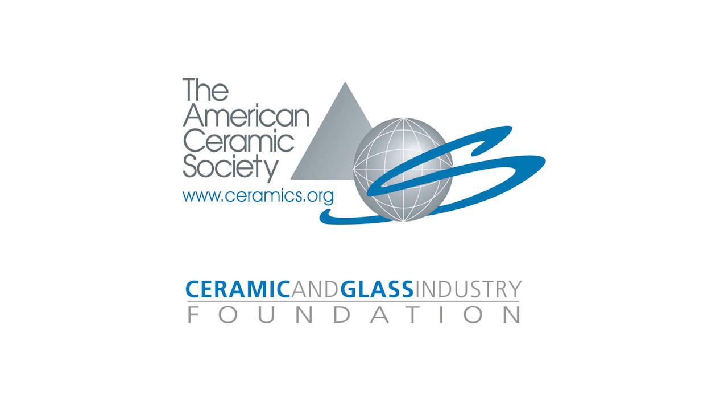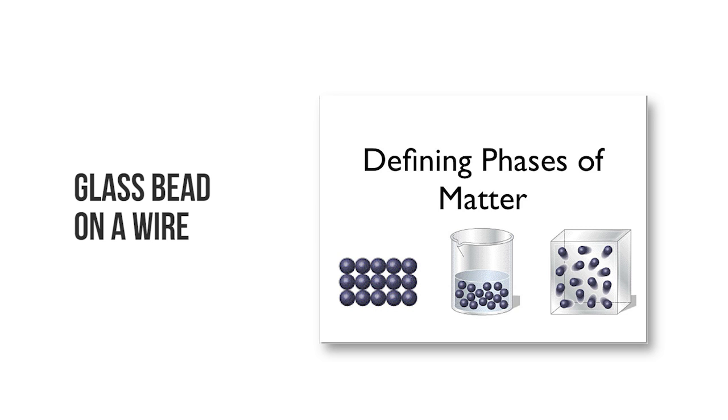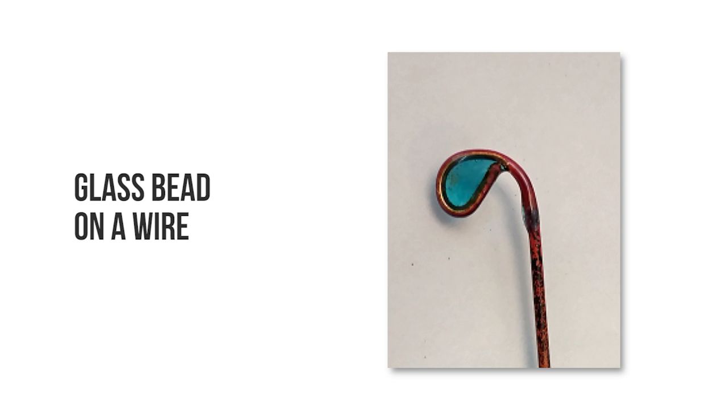The American Ceramic Society and the Ceramic and Glass Industry Foundation are pleased to provide you with this instructional video for the student lab activity, Glass Bead on a Wire. The objective of this lesson is to demonstrate that glass can be a phase of matter rather than a particular material, and to examine the unique ability of glass to absorb other ions during thermal treatments.